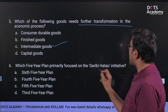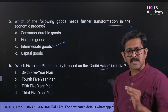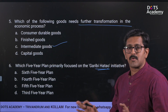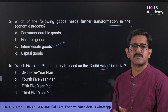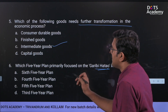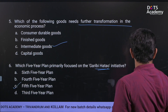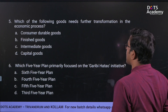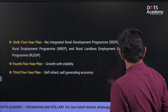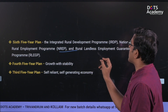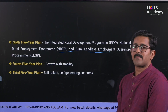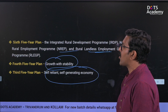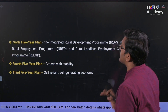Which 5-year plan primarily focused on the Garibi Hatao initiative? You can find the link to the 5-year plans video in the description box. The third 5-year plan focused on growth with stability, while the fourth 5-year plan focused on a self-reliant, self-generating economy. The third 5-year plan being self-reliant is not correct.